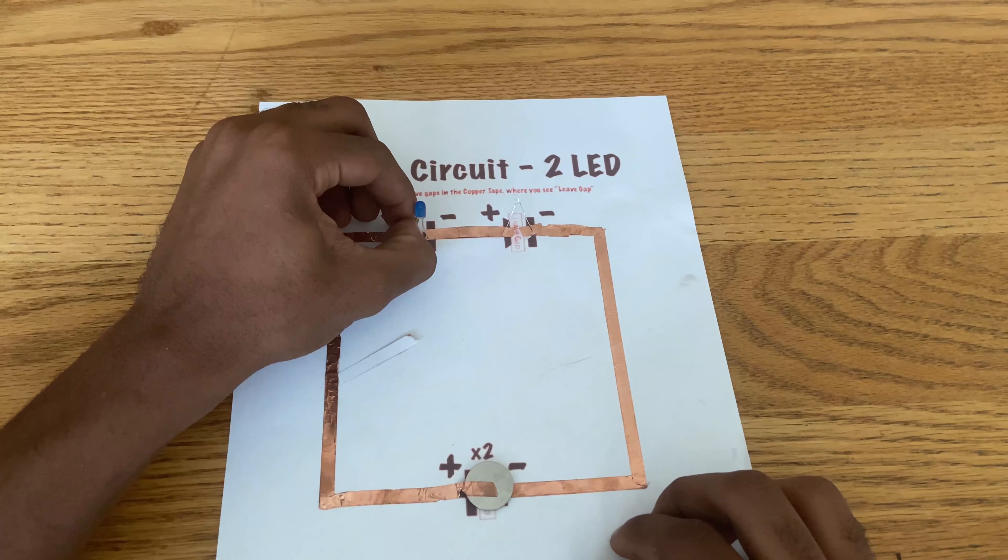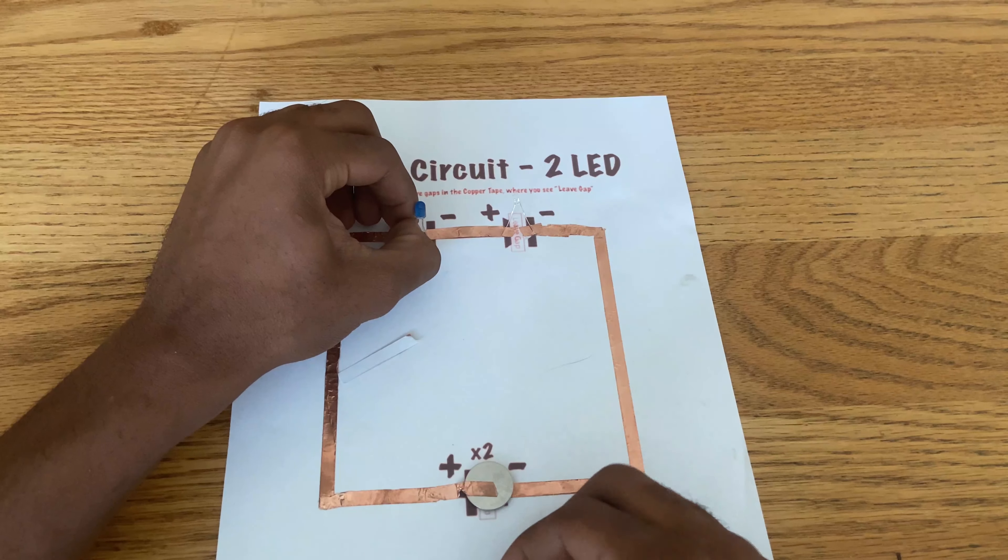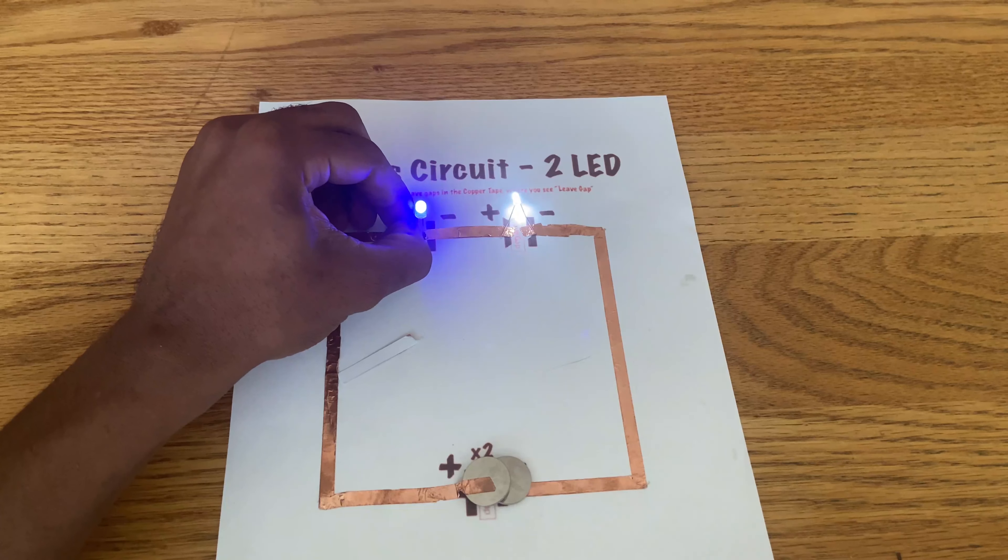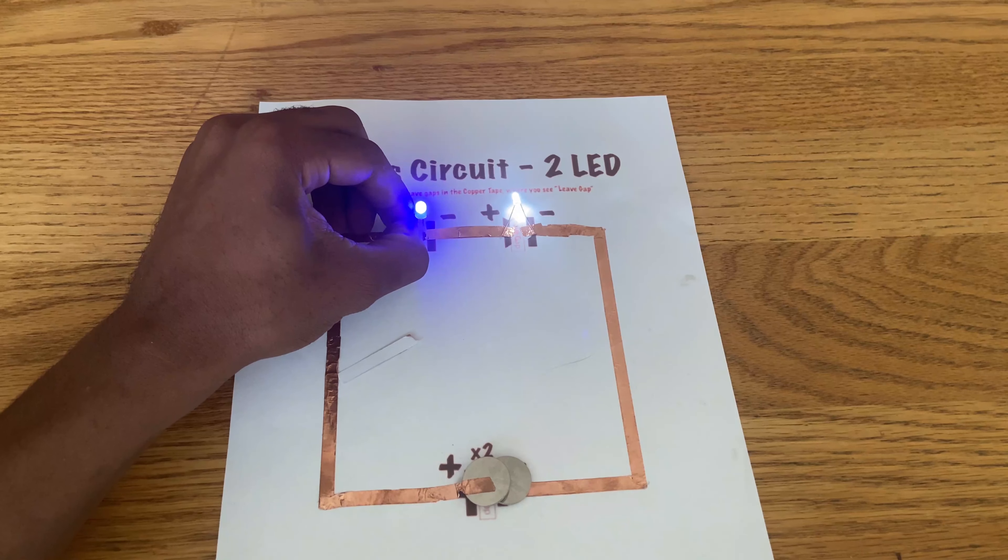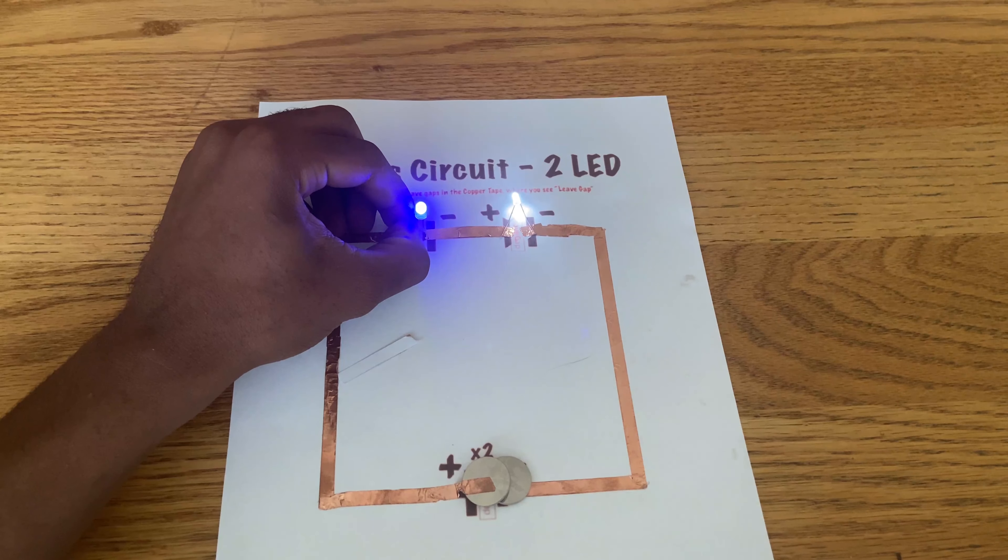What could you do to get the LED to light? I could add another battery and increase the voltage from 3 volts to 6 volts, or I can make a parallel circuit.